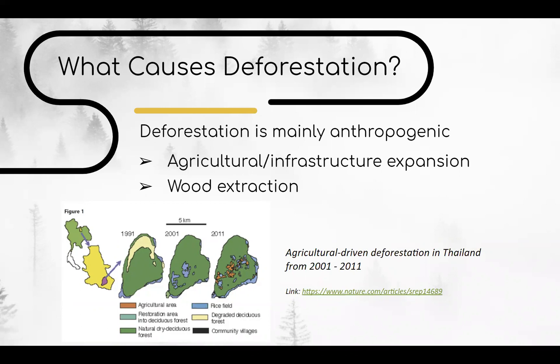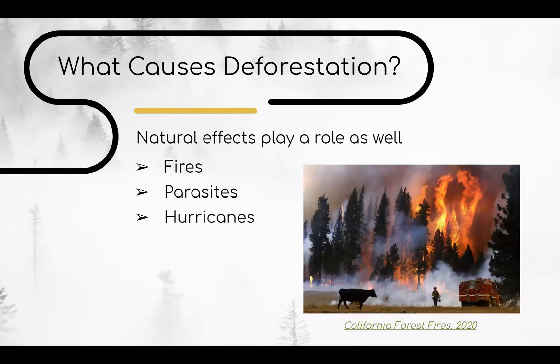This type of deforestation doesn't just happen in Thailand, of course, but all over the world. Deforestation can also result from natural causes, albeit not as much or to as great an extent as human causes — for example, fires like the recent California fires, parasites, or even hurricanes and other natural disasters.